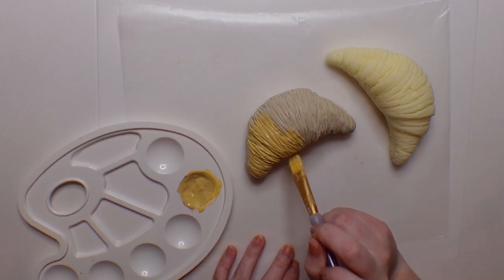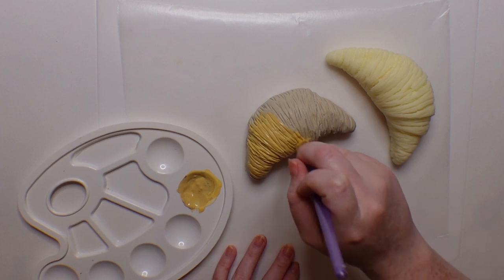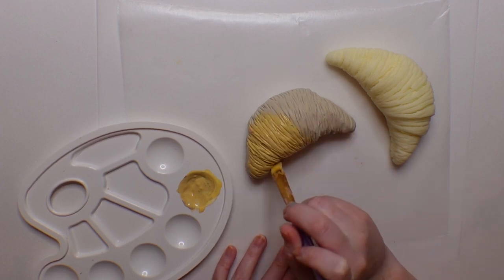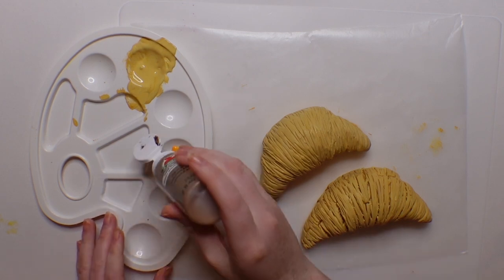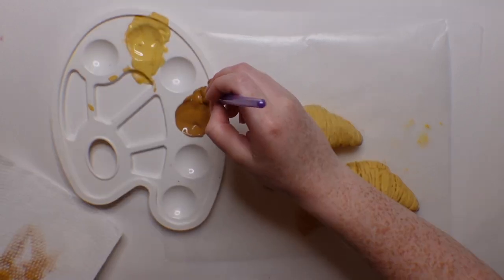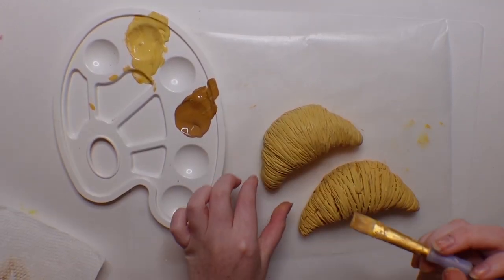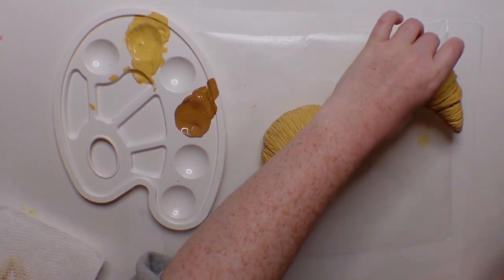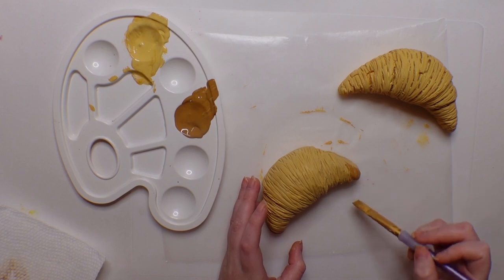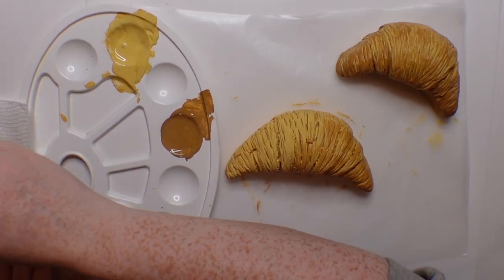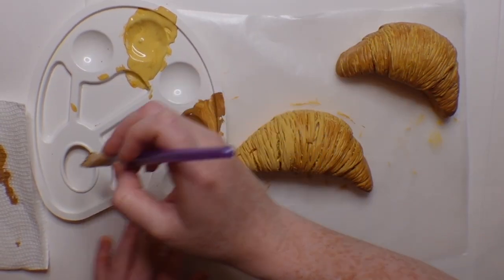For the second layer, I'm mixing up pretty much the same color, just not putting in the Vanilla Ice Cream color, so it's darker. I'm putting a bit of that on the brush and then wiping it off on a paper towel so that I get the most minimal amount onto the croissant itself.